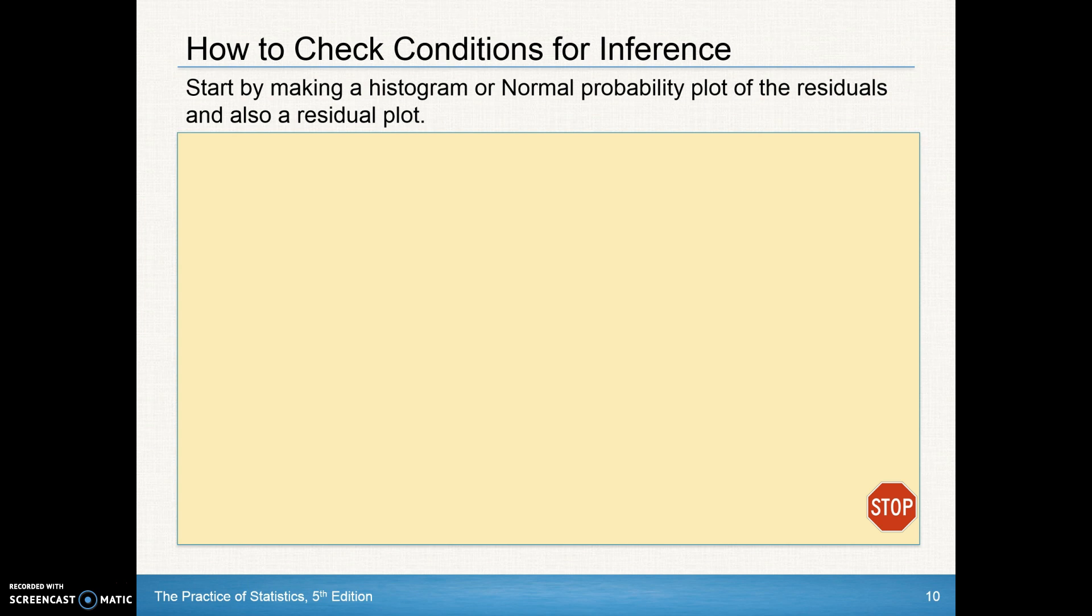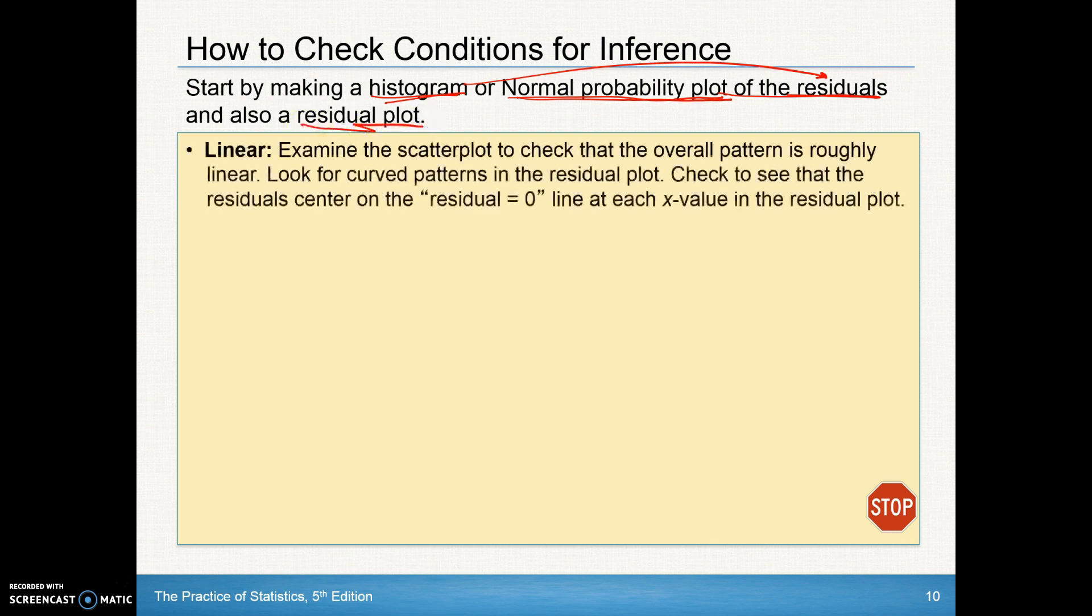So how do we check all these conditions? We'll start by making a histogram or a normal probability plot of the residuals. So a histogram of the residuals or a normal probability plot of the residuals. And we'll also make a residual plot as well. In the linear part of our Liner, examine the scatter plot to check that the overall pattern is roughly linear. So when you take your original data, make a scatter plot, look to see does linear make sense? Look for curve patterns and then also check to see that the residuals center on the zero line of each value for the residuals. So in other words in our residual plot that they are centered right along that zero line right there.